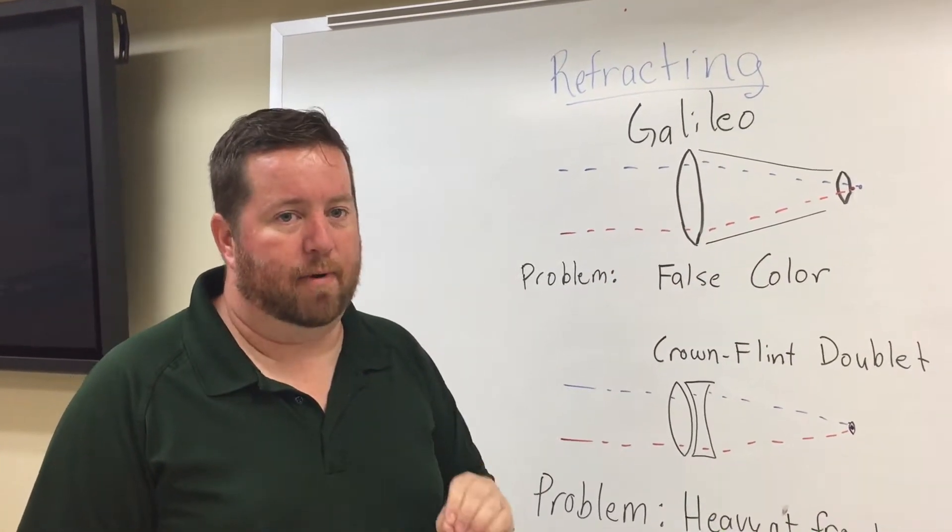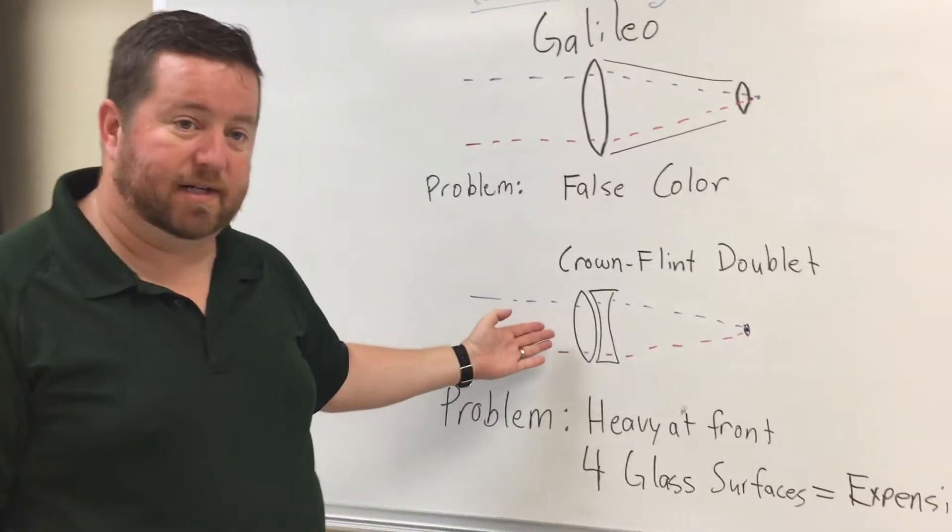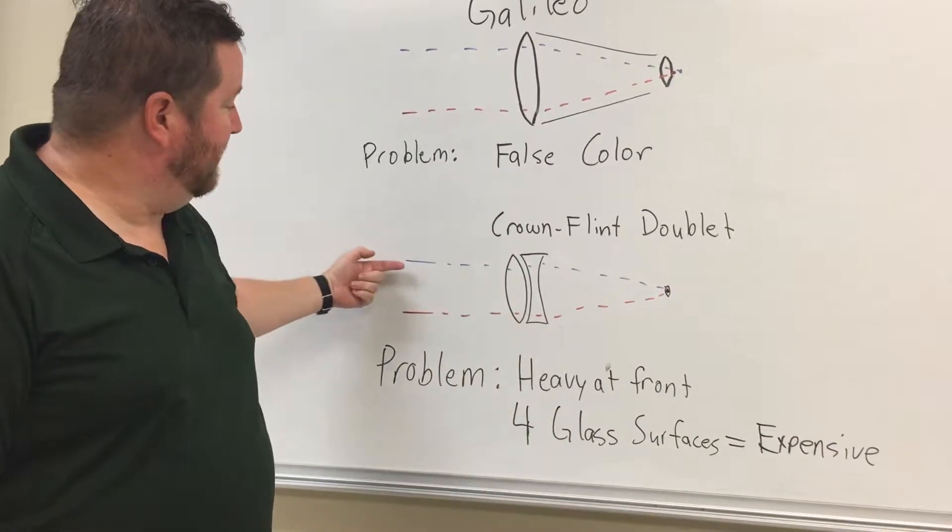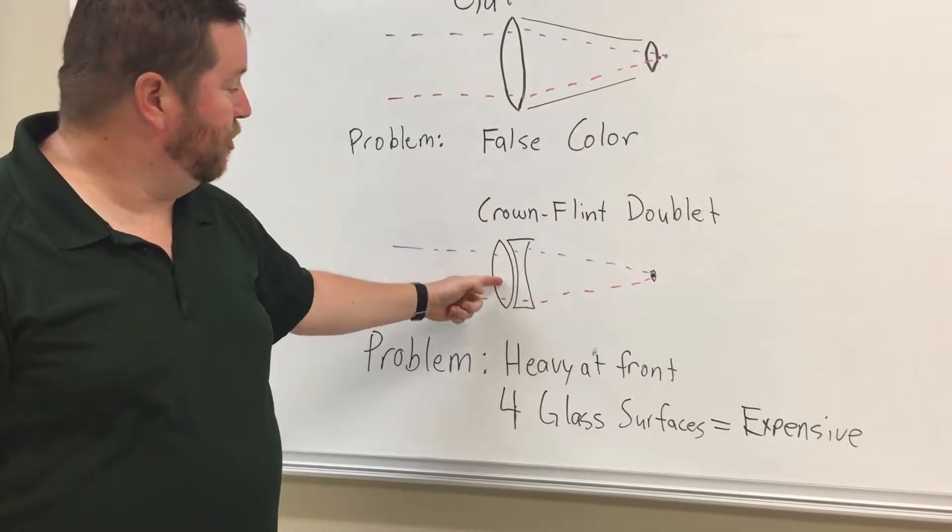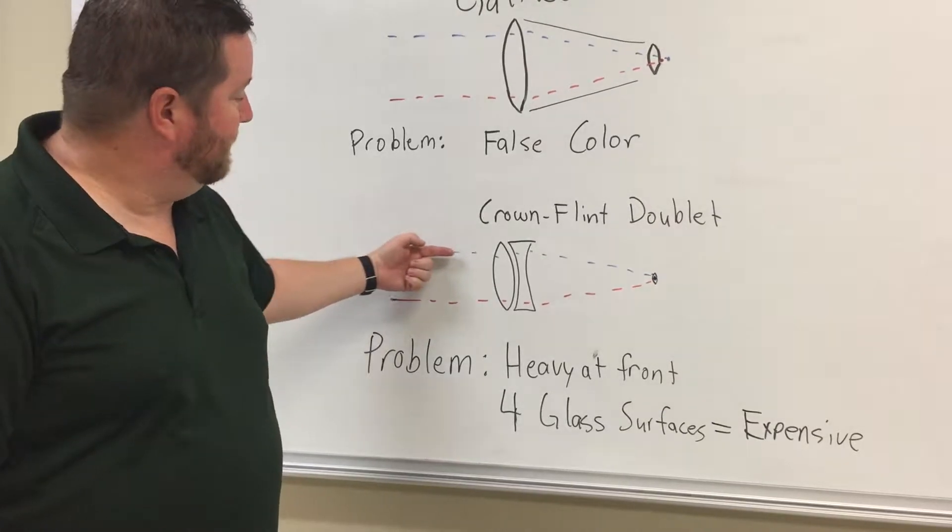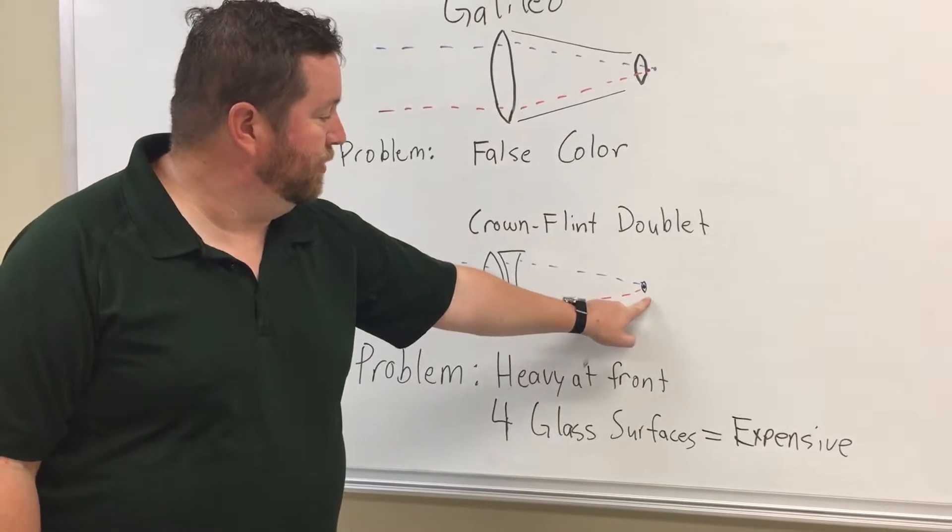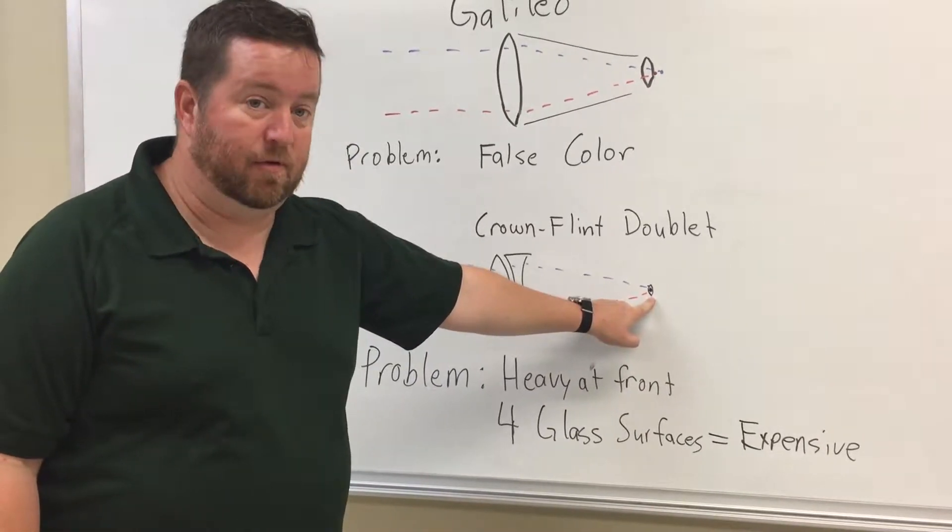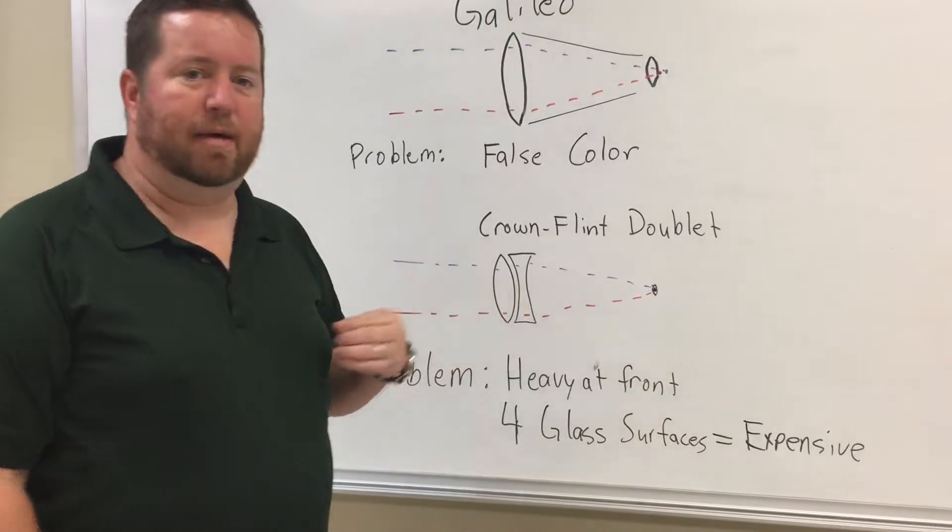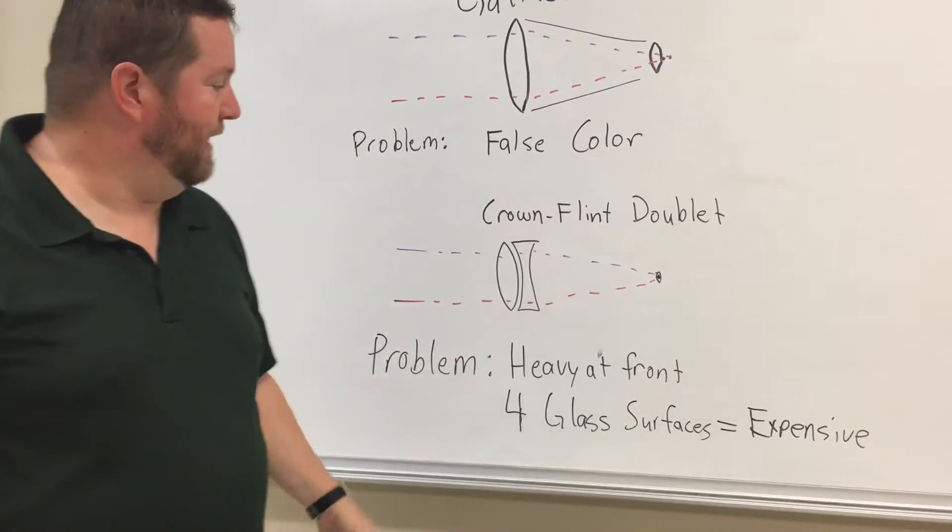So later they corrected this problem with something called the crown flint doublet. And that has two glass elements made of crown and flint, slightly different types of glass. And what happens is it's able to bend the light that goes through that glass, the red and the blue, to reach a common focal point that's much closer. It's still slightly imperfect, but much, much better. And so they were able to trust what they saw. And this helped counter those counter arguments to looking at the heavens.